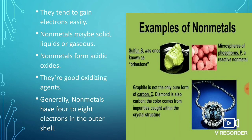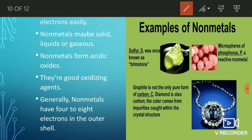Generally, non-metals have four to eight electrons in the outer shell, whereas metals have one to three electrons in their outer shell. Non-metals have four to eight electrons in the outermost shell.